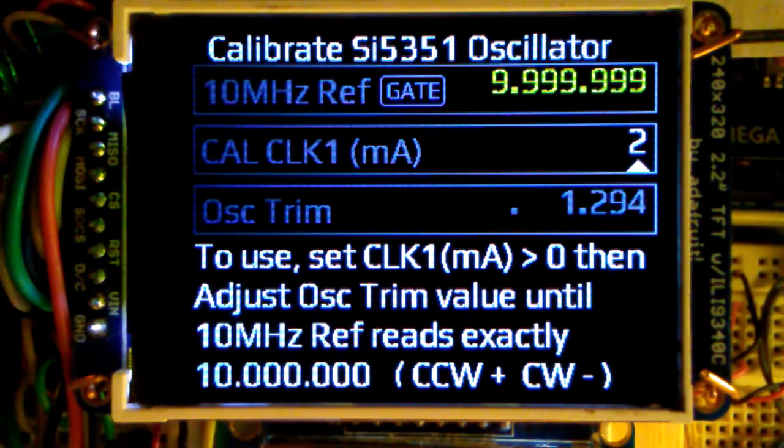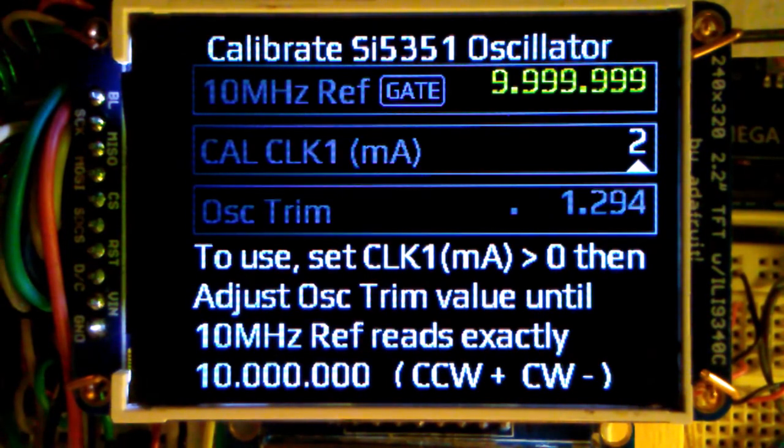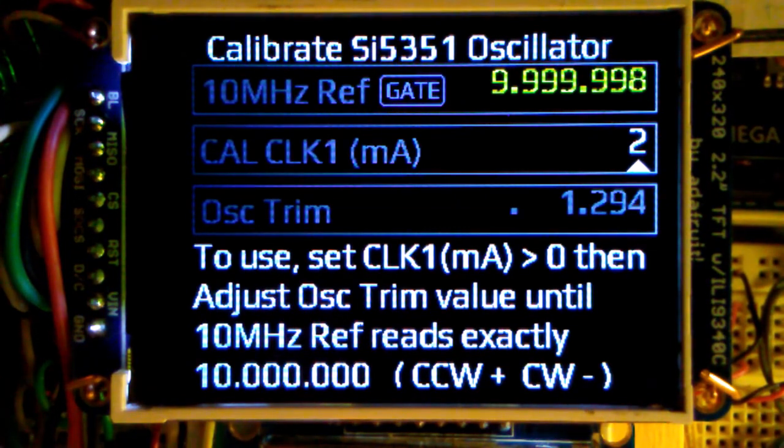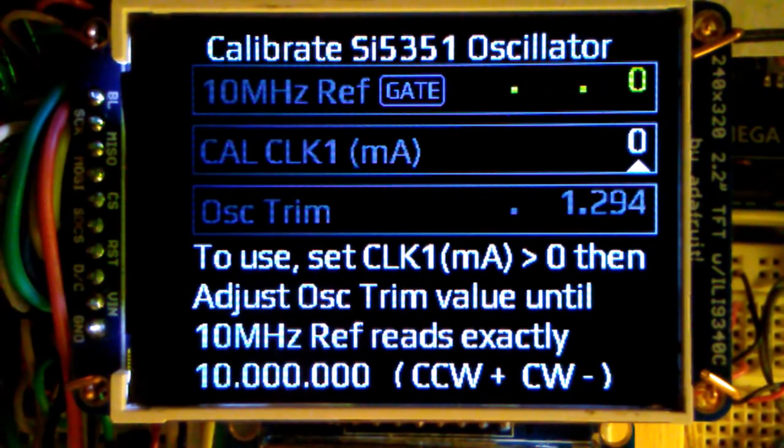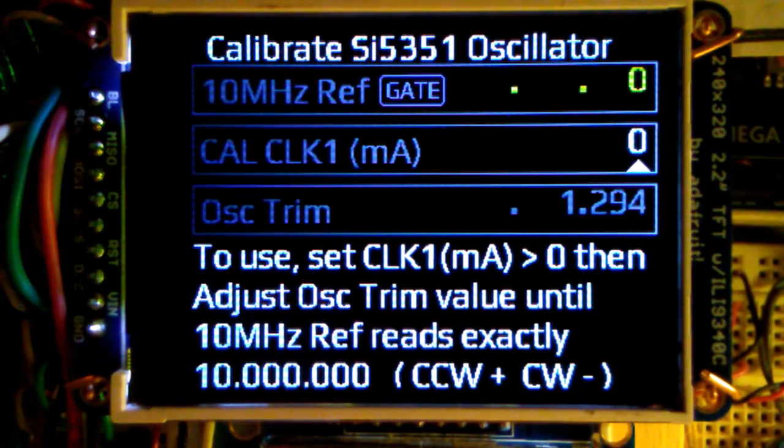Another improvement I made with the firmware is I've added this gate indicator that will flash each time the Arduino receives a one pulse per second pulse from the GPS module. And that triggers the frequency counter to latch the count and send it to the Arduino. So we have a little gate indicator here. That's useful if you can't see the GPS receiver, if it's inside of a box, at least you know you're getting a gate signal if your frequency is not counting or not showing a frequency. In this case, if we turn the level from the SI5351 down to zero, you see that the measured frequency goes to zero. So if you've seen that and you've seen your gate flashing, you know at least you're gating the frequency counter.